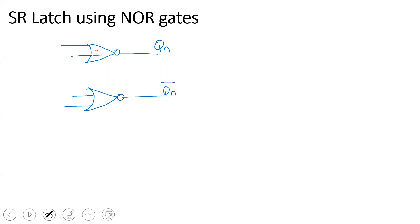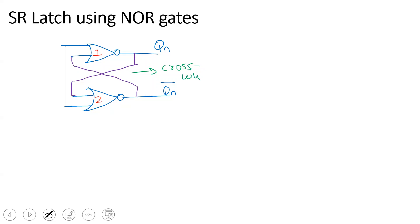One output is QN and another output is QN bar. This is gate 1 and gate 2. QN is used as a memory element or storage element in the sequential circuit. After the output comes, it will feed back as input. Gate 1 output goes to gate 2 input. This connection is called cross coupling.